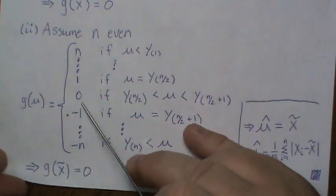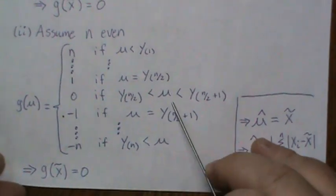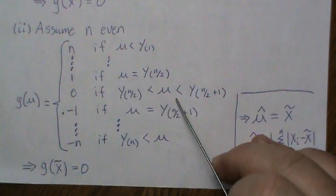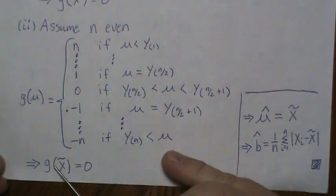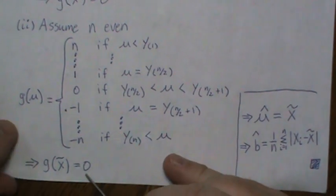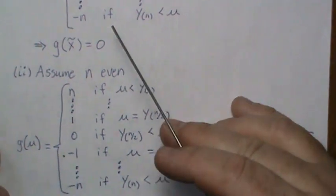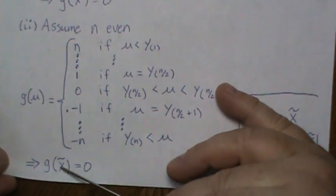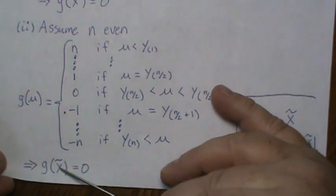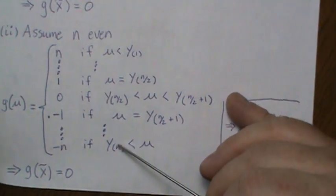And so where is g of mu 0? Well, anywhere between the middle two values, but that's what a median is defined as. So g of the median is 0. Right? So in both cases, when n is odd or n is even, the median of our sample makes that 0.